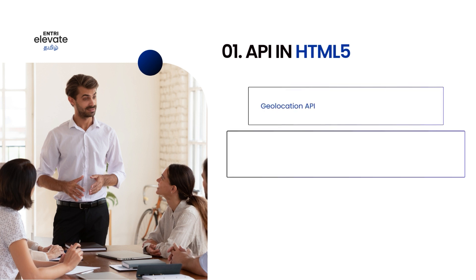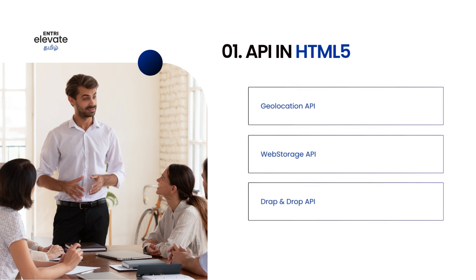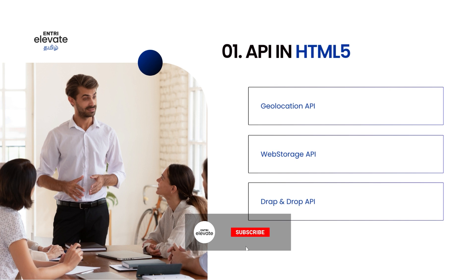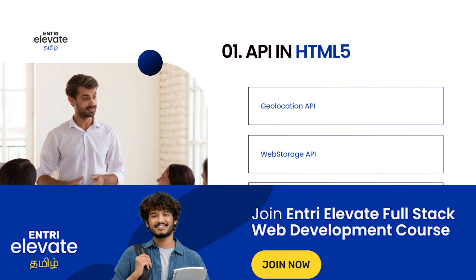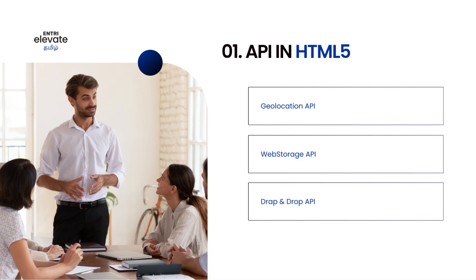The first one is the Geolocation API — that means the user's current location. And then we have the Web Storage API, where data is stored in a web browser, either as session storage or local storage. And then there is the Drag and Drop API, which is a common feature — if you drag something, you can drop it.